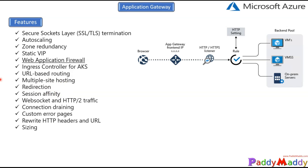Session affinity uses a cookie-based feature that is really useful when you want a user session to stay on the same server. You can maintain that session affinity until the user's activity ends. Application Gateway uses gateway-managed cookies to direct subsequent traffic from a user session to the same server for processing — very important when session state is saved locally on the server.